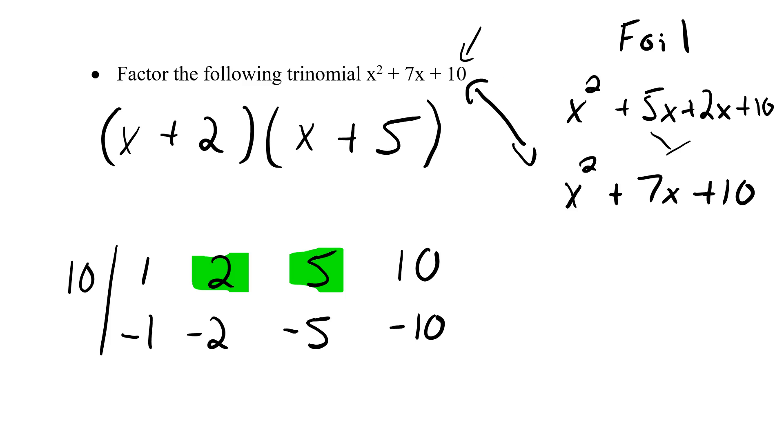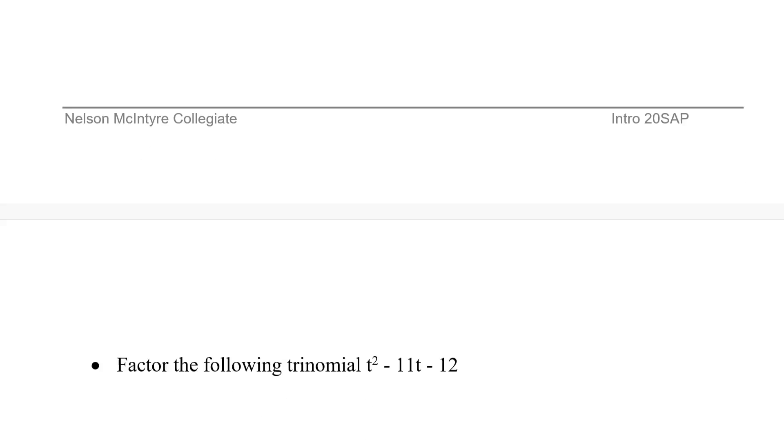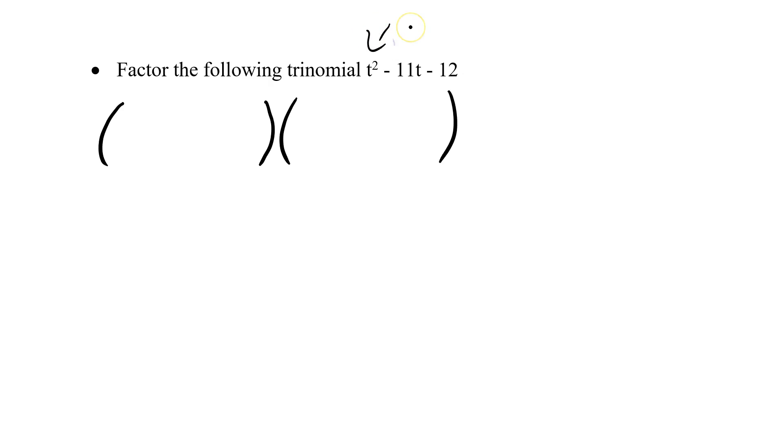So that was our basic question. Let's try one that's a little more difficult. Let's factor the following trinomial t squared minus 11t minus 12. So again my same steps I'm going to open up two sets of brackets where my answer is going to be. I'm going to take my first squared term and I'm going to split it. These are t's so I'll put a t in the first a t in the second.